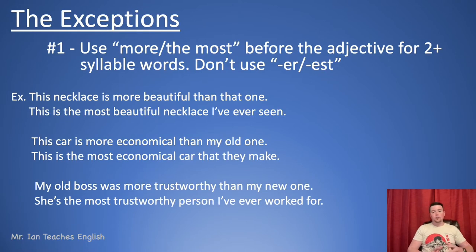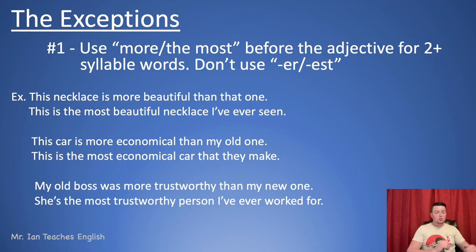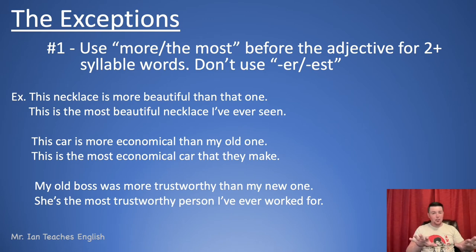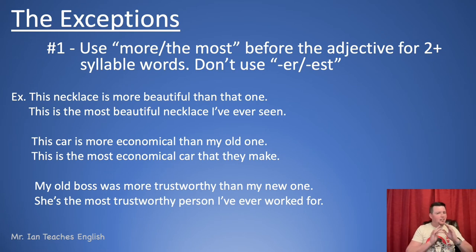Every good rule in English has exceptions, and this one has three. Exception number one: use 'more' or 'the most' before the adjective for two-or-more syllable words, and don't use -ER or -EST. I hear a lot of students say things like 'more faster' — they have both 'more' and '-ER'. You'll never use both. You need to follow the rules and exceptions to figure out which one is correct, but you'll never use both.